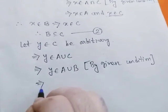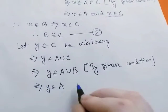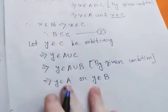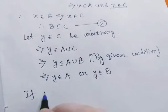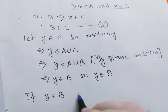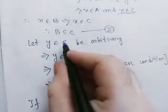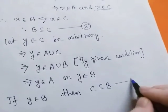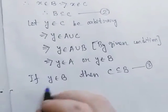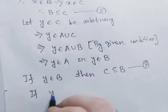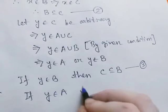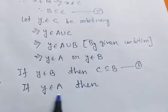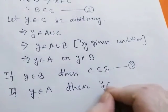This implies y belongs to A or y belongs to B. So if y belongs to B, then C subset of B — we name this case 3. And if y belongs to A, then we start with y belonging to C.